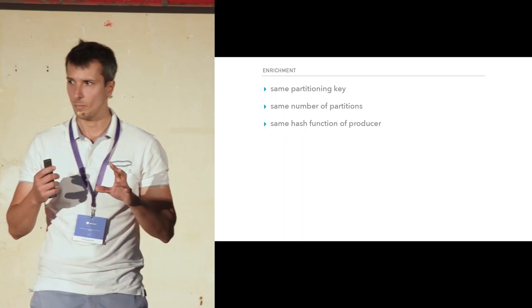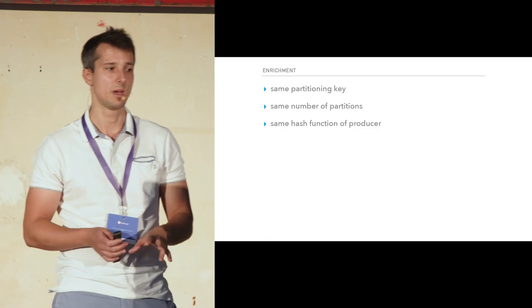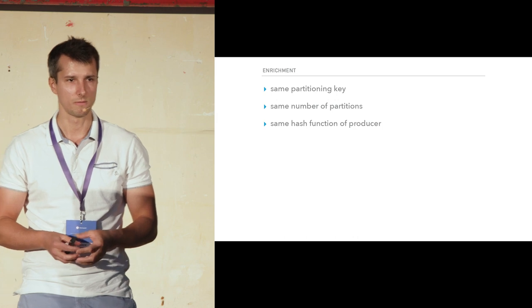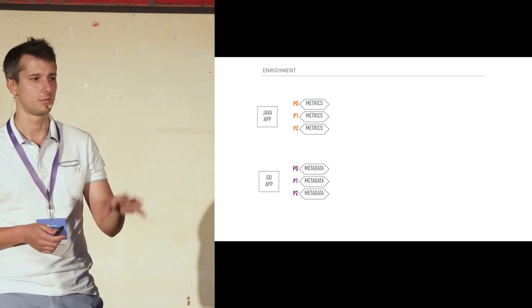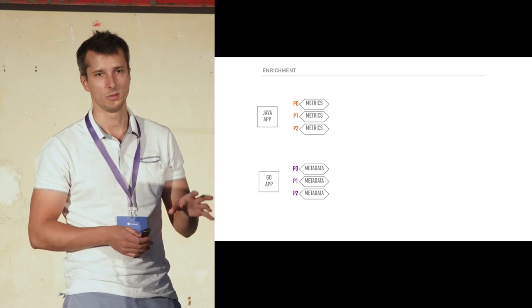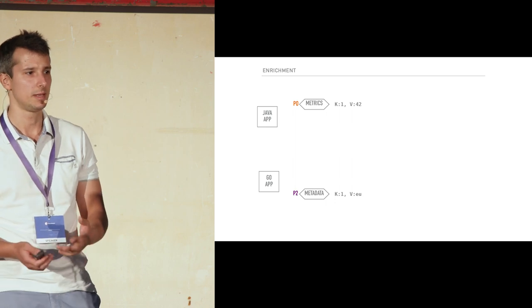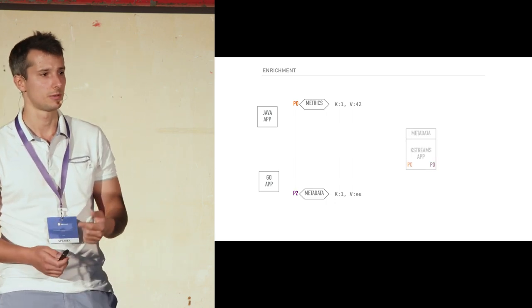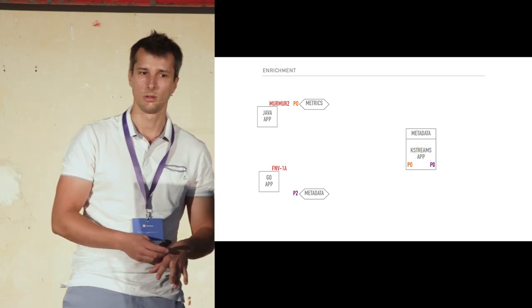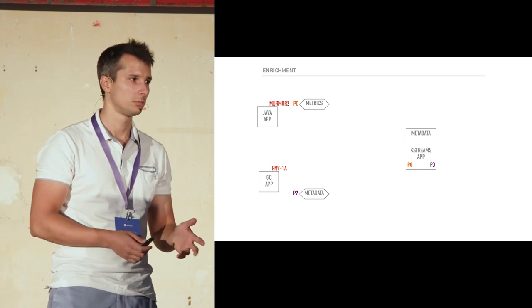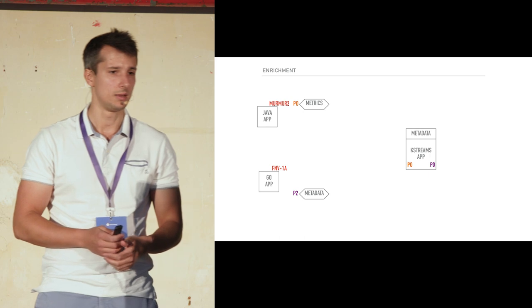For this magic to work, you need the same partitioning key, the same number of partitions in each topic, and the same hash function on the producer. This came as a bit of a surprise. In our system, we have Java and Go applications — the Java application produced to the metrics topic and the Go application to the metadata topic. We observed that messages with the same key ended up in different partitions. It turns out that for historical reasons, the Java and Go Kafka libraries use different hash functions to determine which partition to send data to. So the match simply didn't happen.